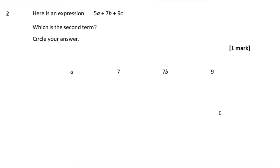Question 2 — here is an expression: 5A plus 7B plus 9C. Which is the second term? The terms are the different parts that are added together. So 5A is the first term, 7B is the second term, and 9C is the third term. So the second term is 7B.